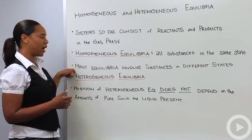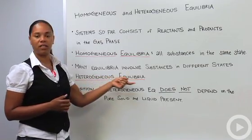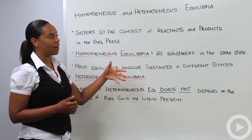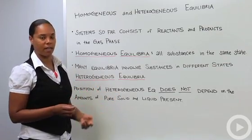Many equilibria involve substances in different states, and we call those heterogeneous equilibria to imply that we have substances, reactants and/or products, that are not all in the same phase.